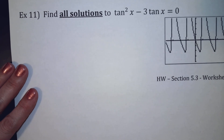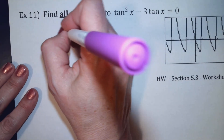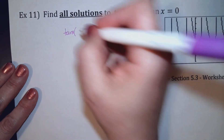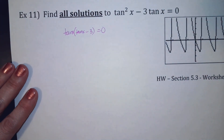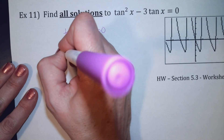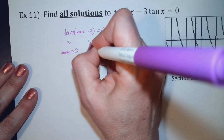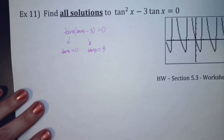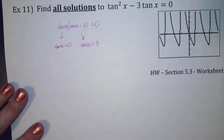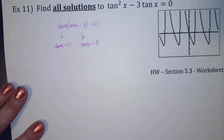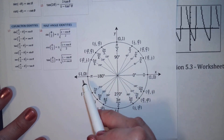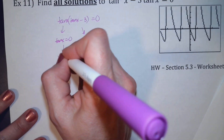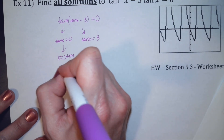And the last one. All solutions. I notice they have a tangent in common, so factor out a tangent: tangent times (tangent minus 3) equals 0. So tangent equals 0, and tangent equals 3. Tangent is y over x, so I need the y value to be 0. That happens at 0 and pi — they're pi apart. So x equals 0 plus pi·n, or basically x equals pi·n.